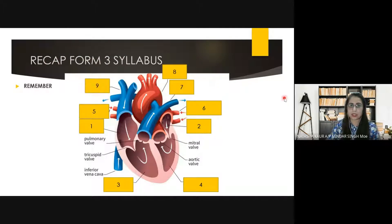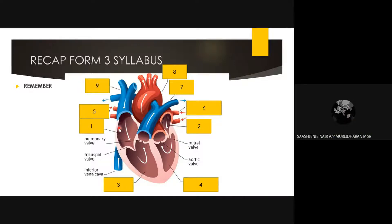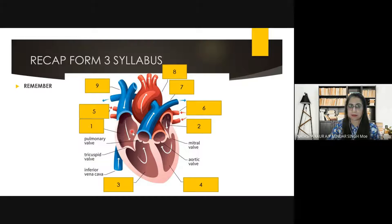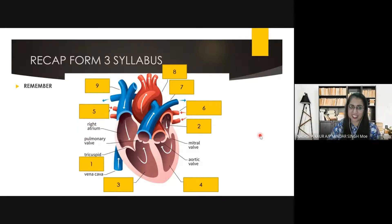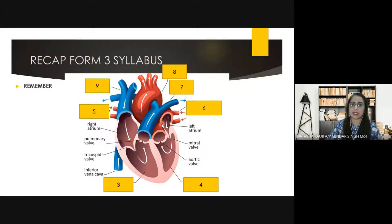Let's recall what these structures are. Number one — what is this part? The right atrium. Is this the right part? Yes. So that is the right atrium. And if this is the right atrium, then this side will be the left atrium.